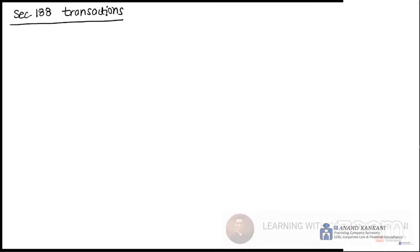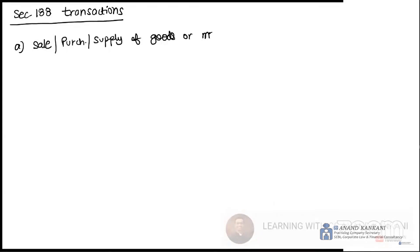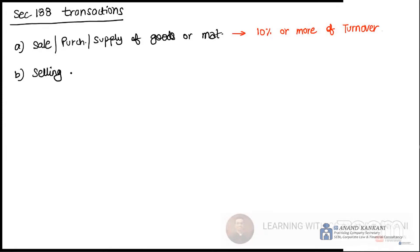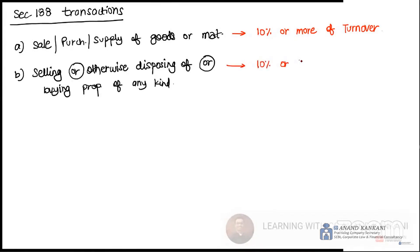I will tell you along with the limits. This chart will be the most important for you. If there is a sale, or a purchase, or a supply of goods or materials, the limit for this transaction is 10% or more of the turnover. The other transaction is selling, or otherwise disposing of, or buying the property of any kind. The limit for this is 10% or more of the net worth.